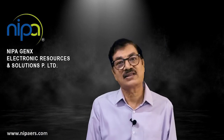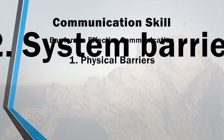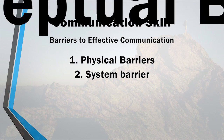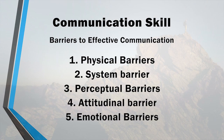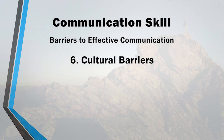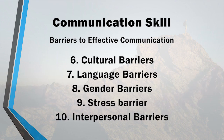Now let's talk about barriers of communication — things that make communication ineffective. The first barrier is the physical barrier. The second is the system barrier. The third is perceptual. Then comes attitude. Next is emotional barrier, then cultural barrier, then language barrier, then gender barrier, then stress barrier, and the last one is interpersonal barrier.